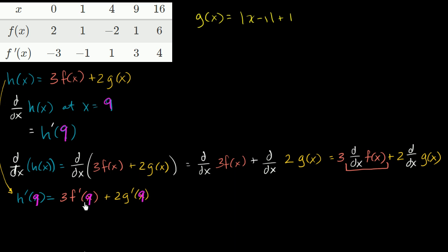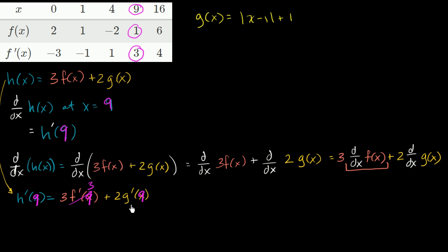What is f prime of 9? That's the derivative of f when x equals 9. They tell us when x equals 9, f of 9 is 1, but more importantly f prime of 9 is 3. So this part evaluates to 3. But what's g prime of 9?